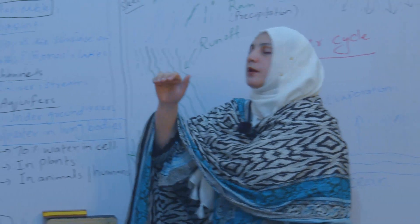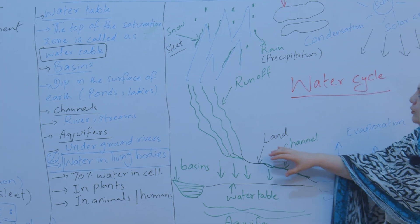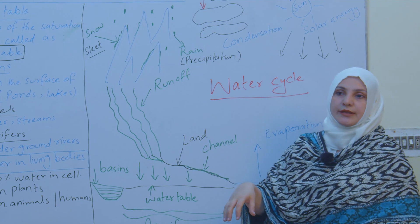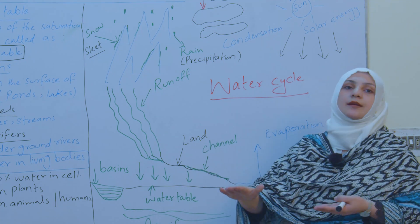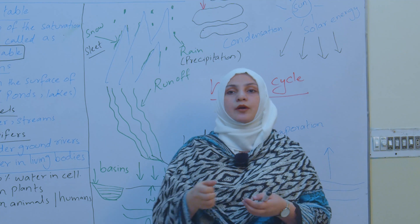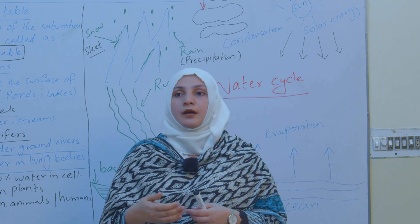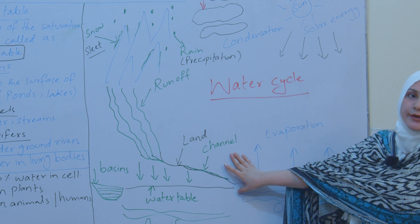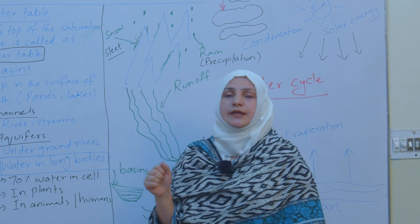After discussing basins, channels, and aquifers, we talk about the water table. The top of the saturation zone is called the water table. Water is percolated and absorbed in the soil to a specific depth. When you start digging the soil, the upper layers are dry, but when you dig to a very deep depth, you get water — like when we build wells. That depth is basically the water table. So basins, channels, and the underground water table — the top saturation zone — are all part of how water exists in our environment.